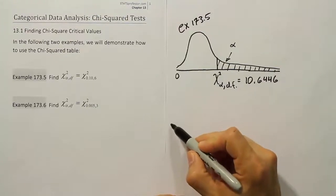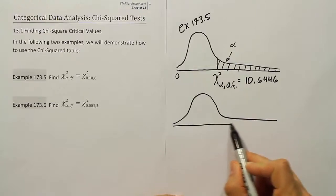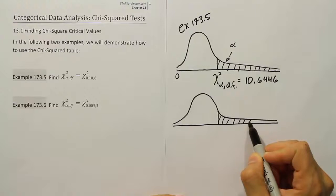Let's draw the curve then for the next one. So again, a long right skewed drawing here. And again, we'll have a shaded area here in the tail.